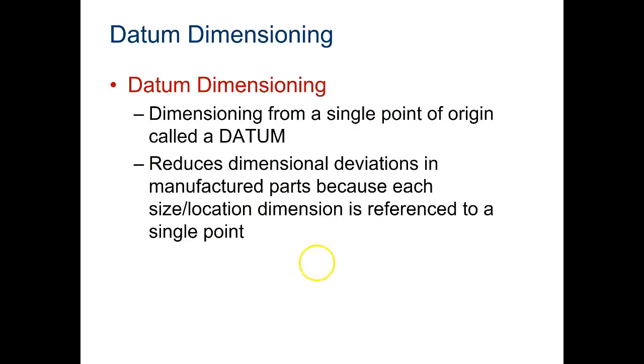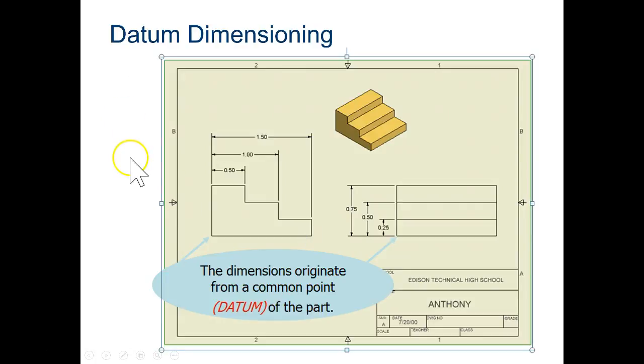We're going to be using datum dimensioning. This reduces manufacturing deviations because we're using a common point for all measurements. If you look at this, this is an example. Every one of these three measurements begins at this leftmost edge.